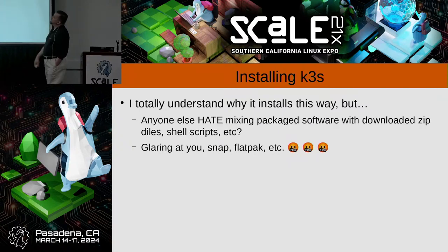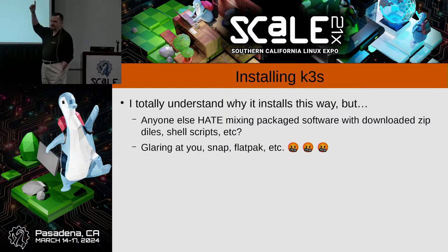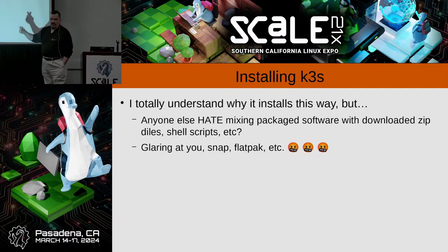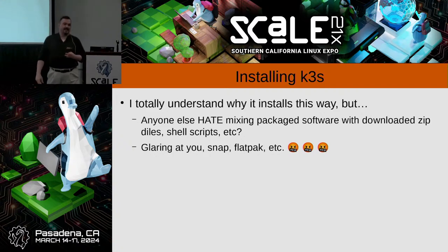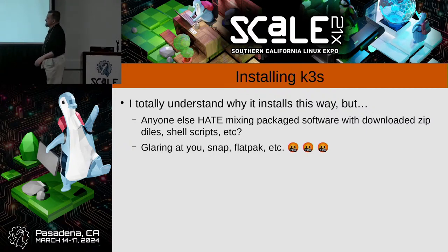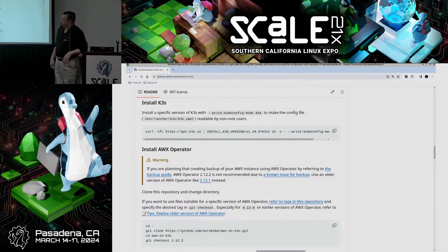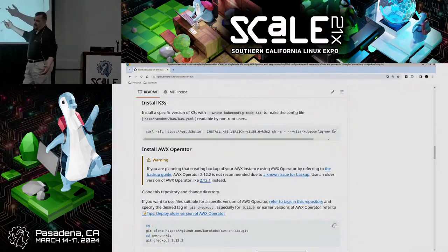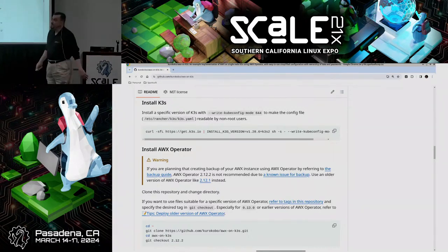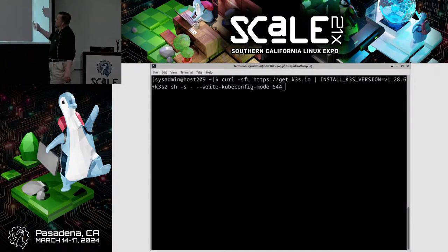Does anyone else hate mixing packaged software with things like Flatpaks and Snaps? I really want three different distribution mechanisms to manage my 10,000 servers — I hate that. So then it talks about installing K3S, and the way that you do that is you use curl piped to bash. I hate that too. But we're doing this for a demo, so I ran the commands.